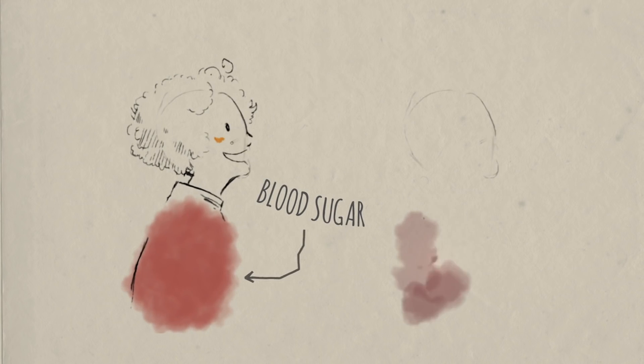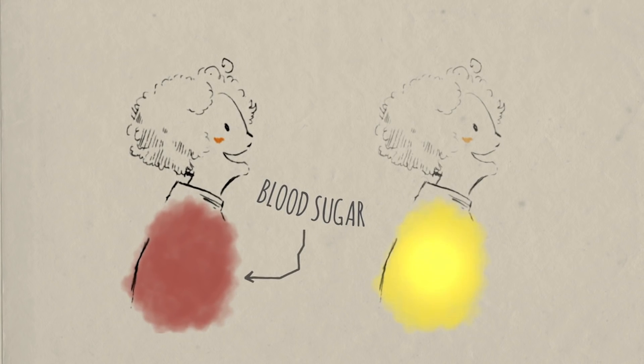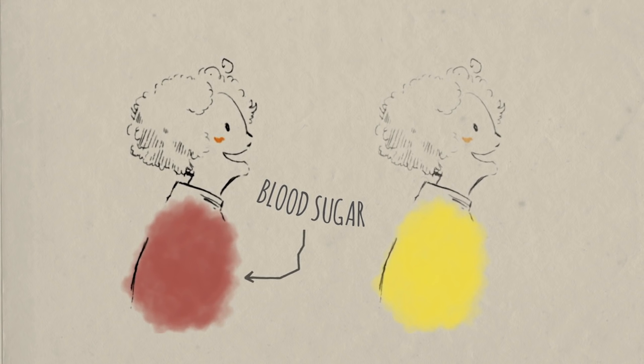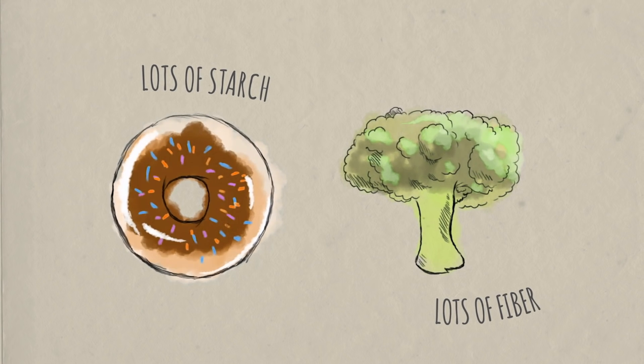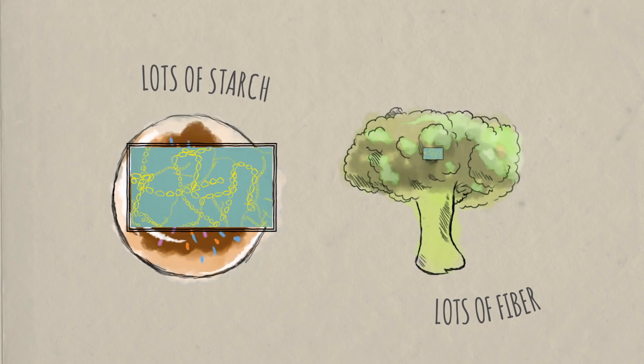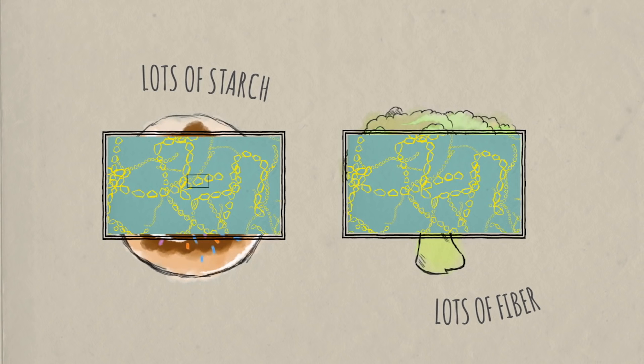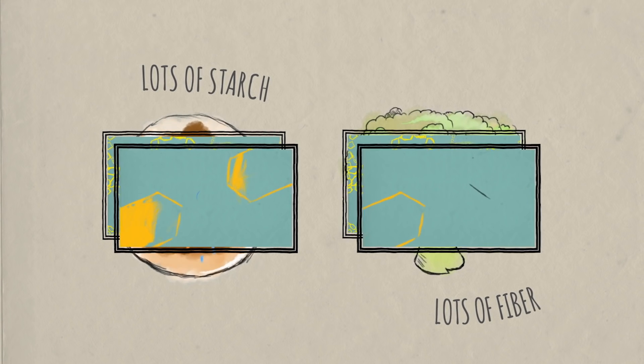But your digestive tract doesn't respond to all carbohydrates the same. Consider starch and fiber. Both polysaccharides, both derived from plants, both composed of hundreds to thousands of monosaccharides joined together. But they're joined together differently, and that changes the effect they have on your body.